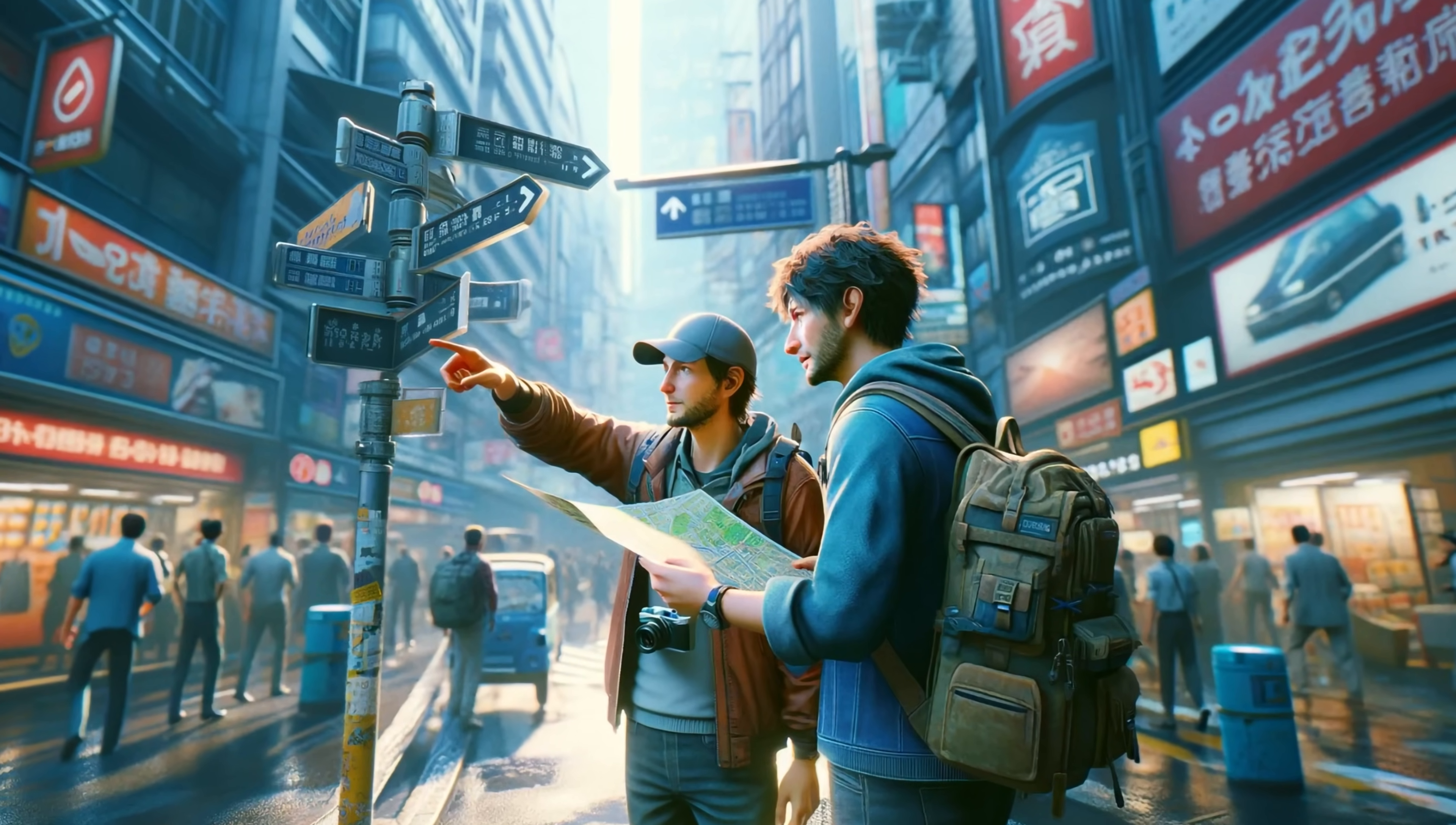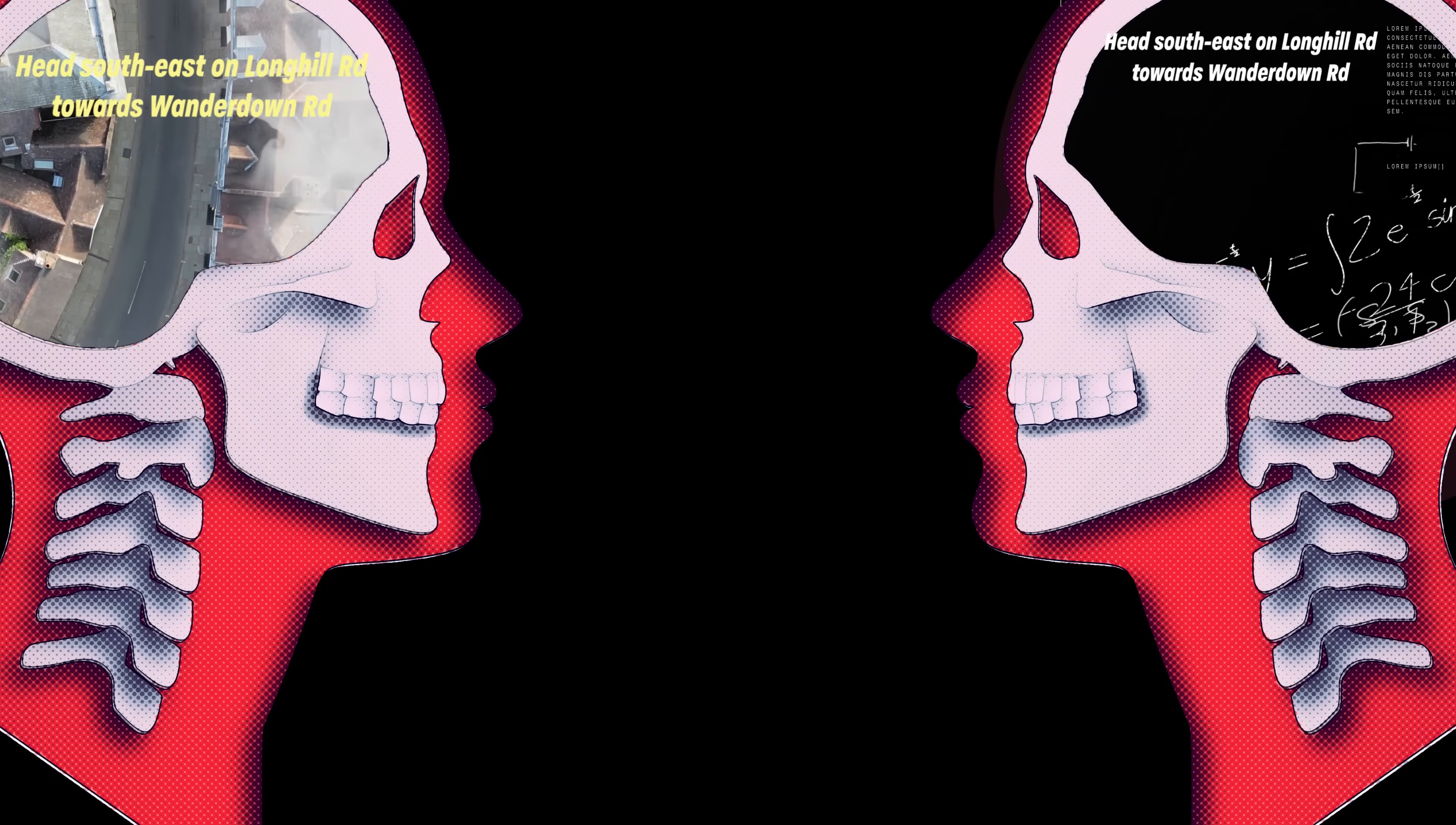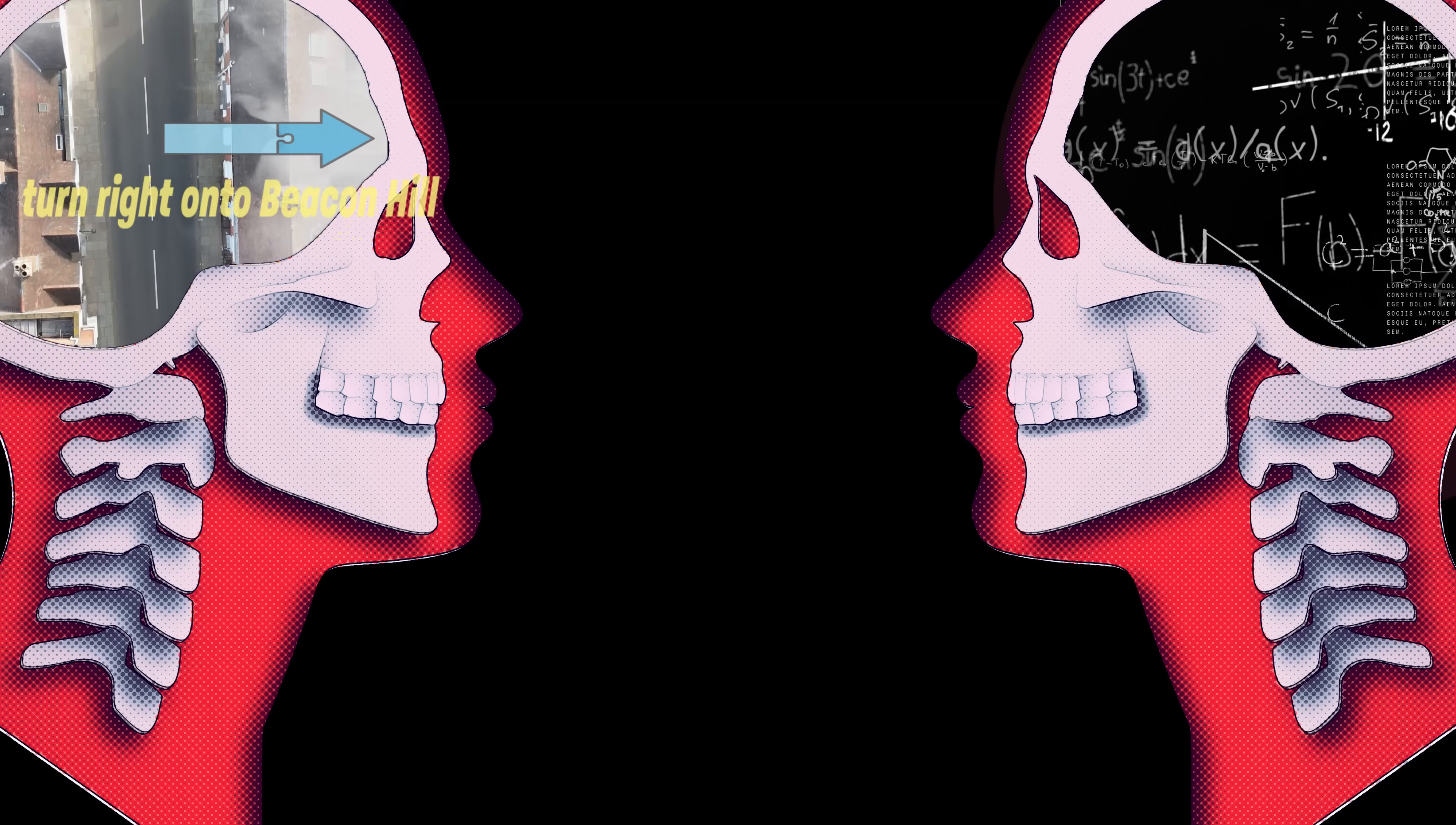For example, when asked for directions I can vividly visualize the route in my mind's eye. In contrast, my colleague knows the same directions but processes the information as mere facts. She sees no images in her mind, only darkness.